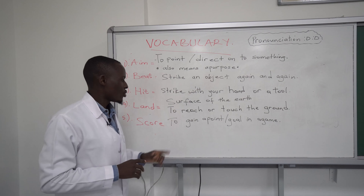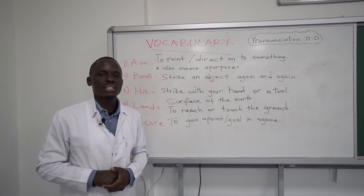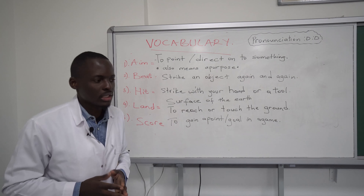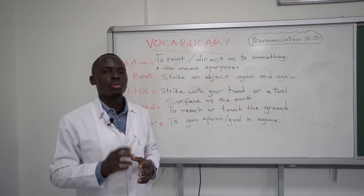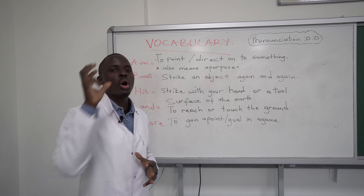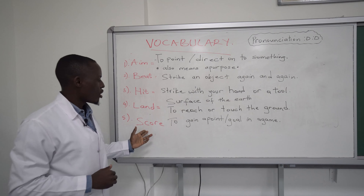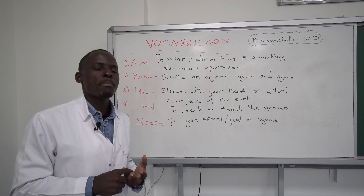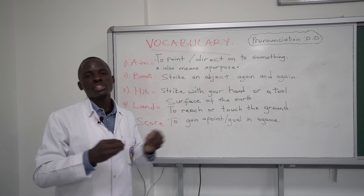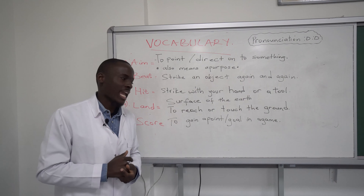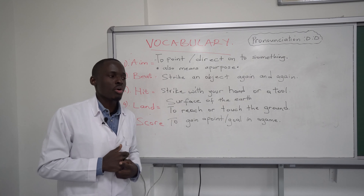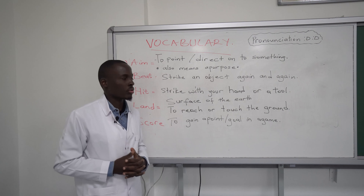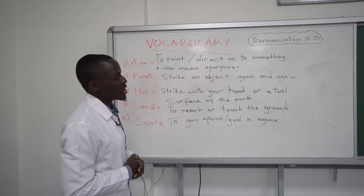Score has two meanings as well. One is to gain a point — when a basketball or football player scores a point, we say to score. Score can also mean a goal or a point in a competition or game, like a final score of two-zero.